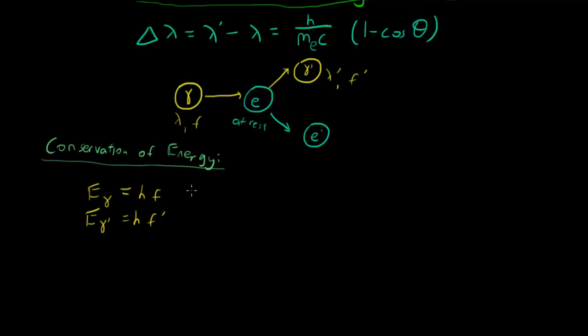How about the electron? Well, since it's at rest, we know that the energy of the electron before is basically given by Einstein's energy-mass equivalence equation. So it's m_e c². And I'm sure you guys have seen that one before.